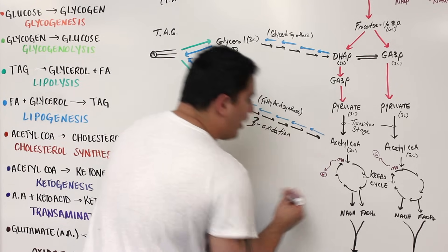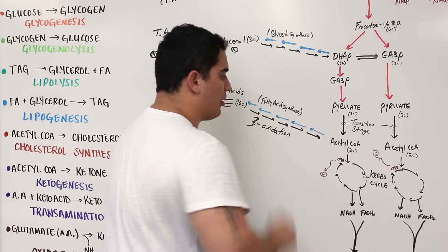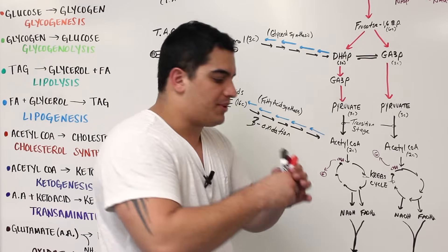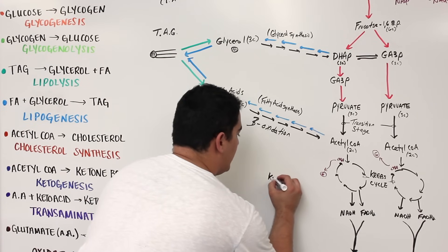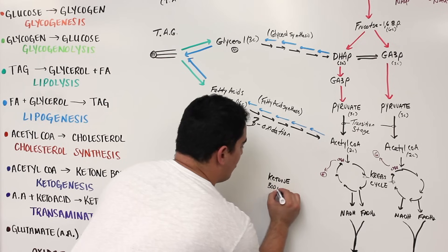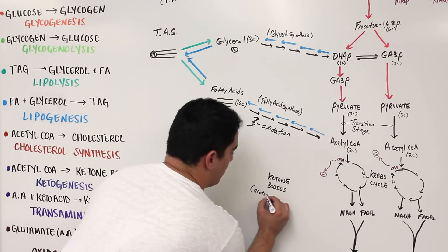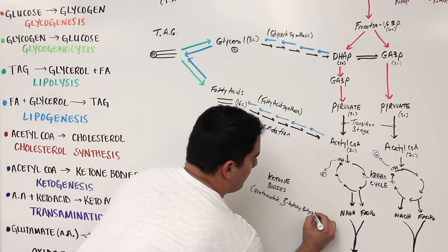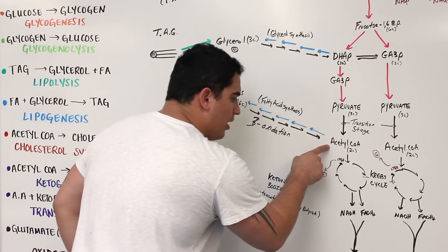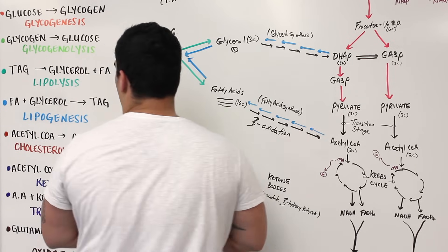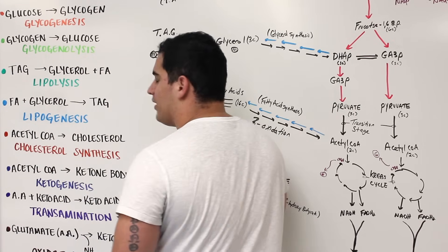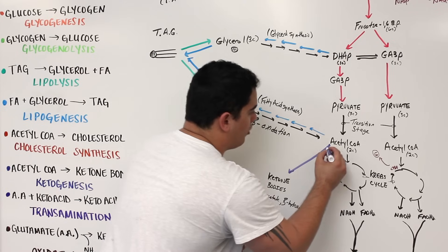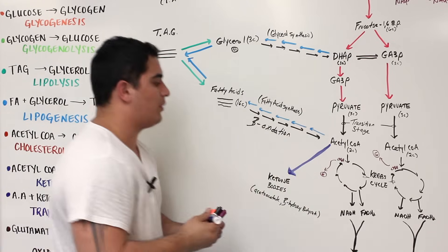Our brain primarily runs on glucose and doesn't really break down fatty acids, but it can use another special molecule. When acetyl-CoA builds up, the body fuses acetyl-CoA molecules together through special steps to make ketone bodies. Going from acetyl-CoA to ketone bodies — that is called ketogenesis.